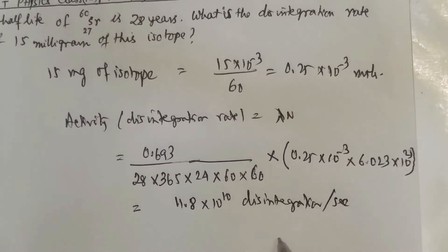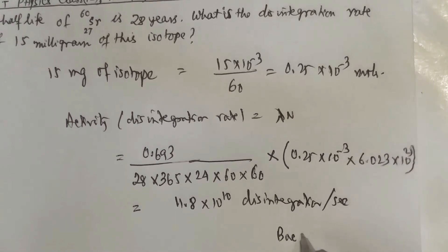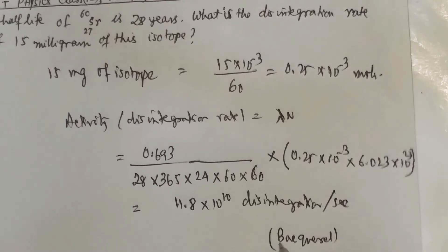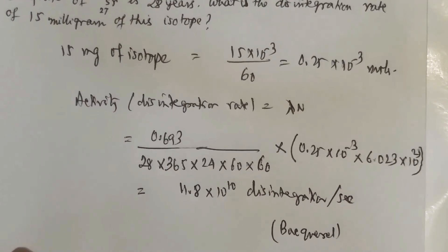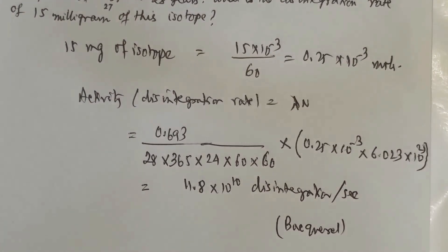Disintegrations per second is also called Becquerel. That is, one disintegration per second is one Becquerel. This is a unit of radioactivity. You can leave your answer in 11.8 into 10 to the power 10 Becquerel.